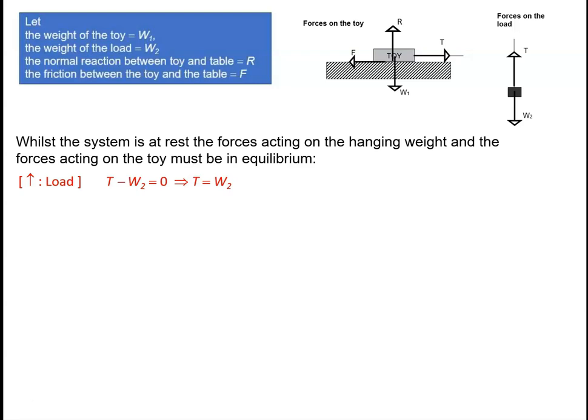Then, considering the toy, the total horizontal force acting on the toy must also equal zero because the toy is in equilibrium. Therefore, T minus F equals zero, or equivalently, T equals F. Eliminating T between the two equations, we determine that for equilibrium the frictional force F must equal the weight of the load W2.